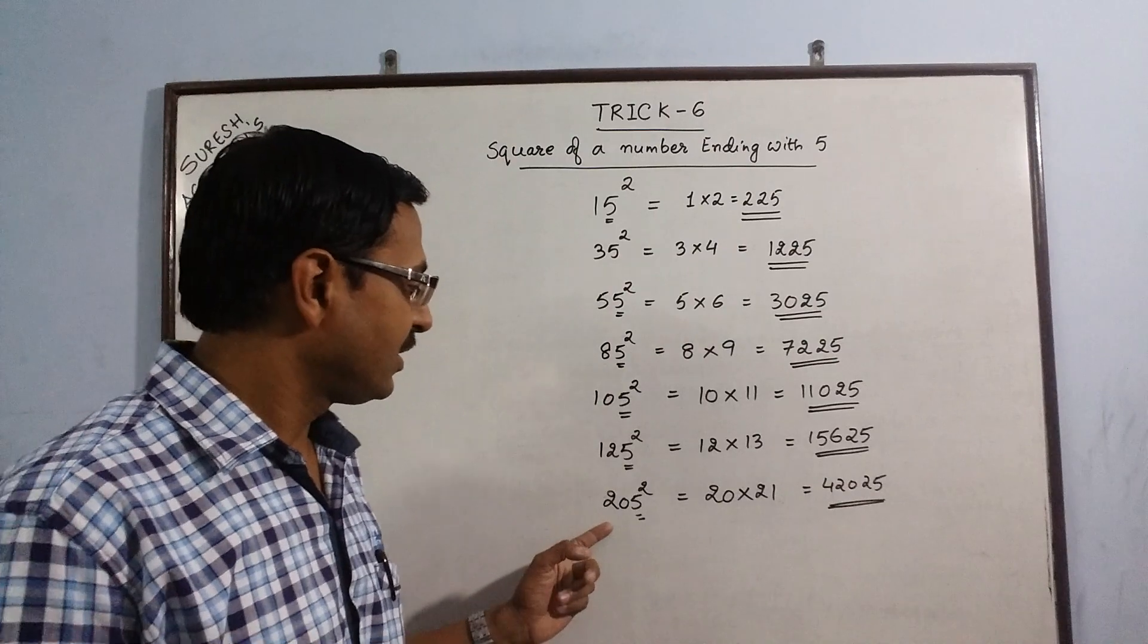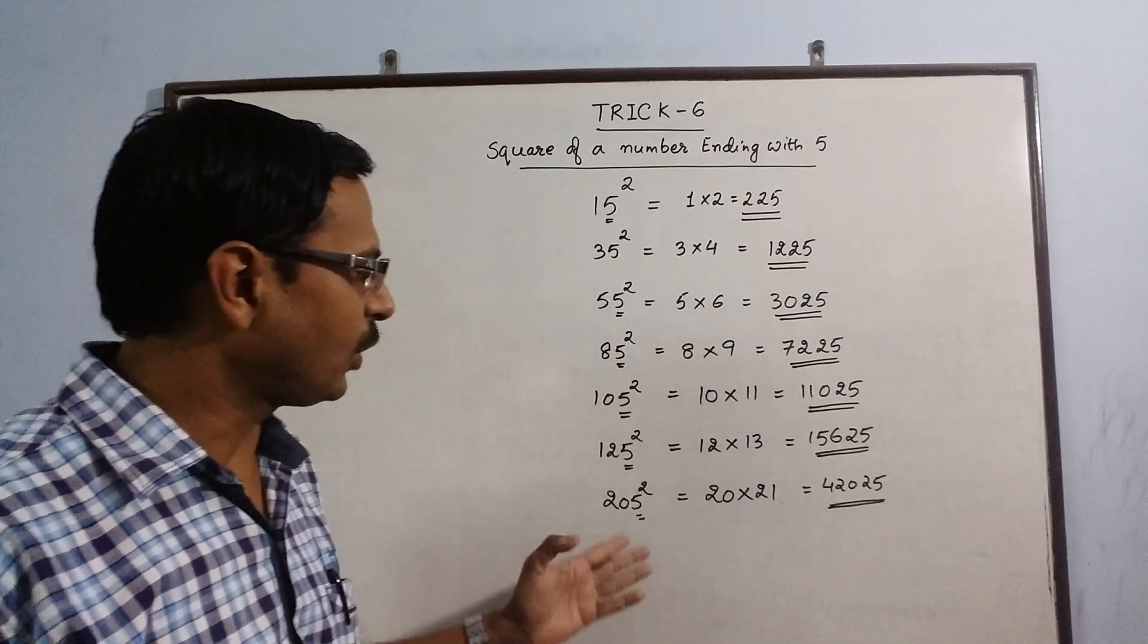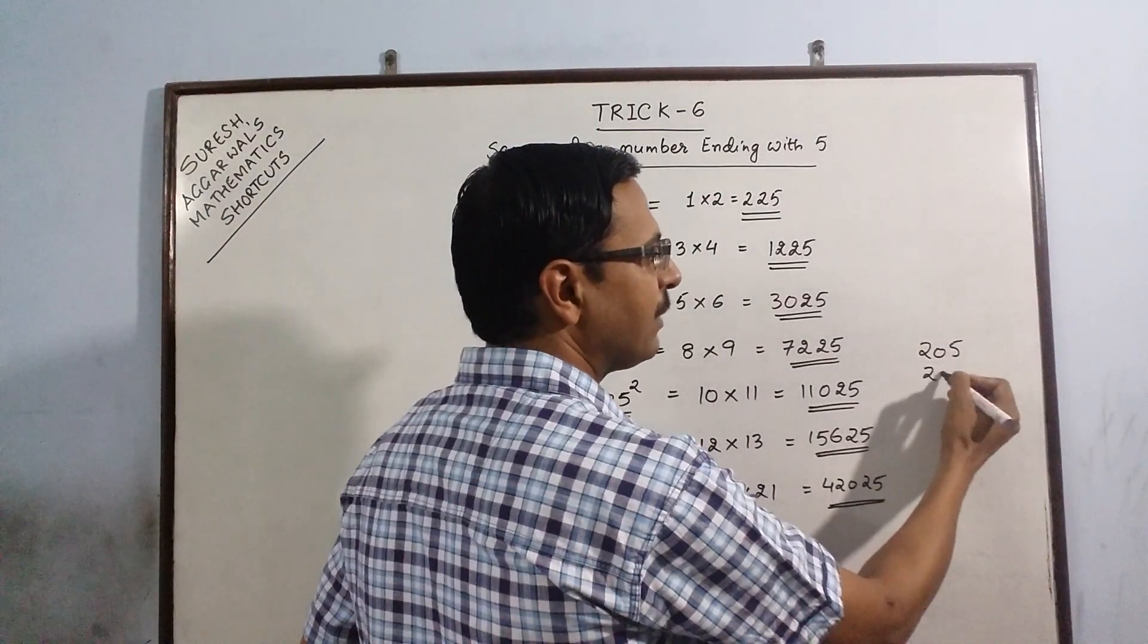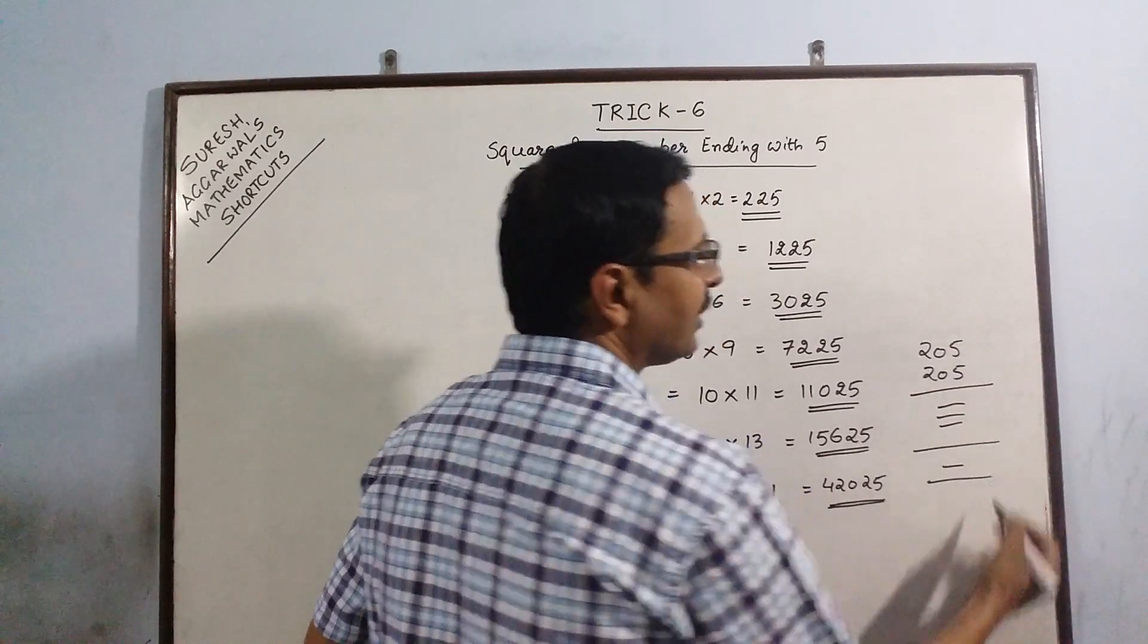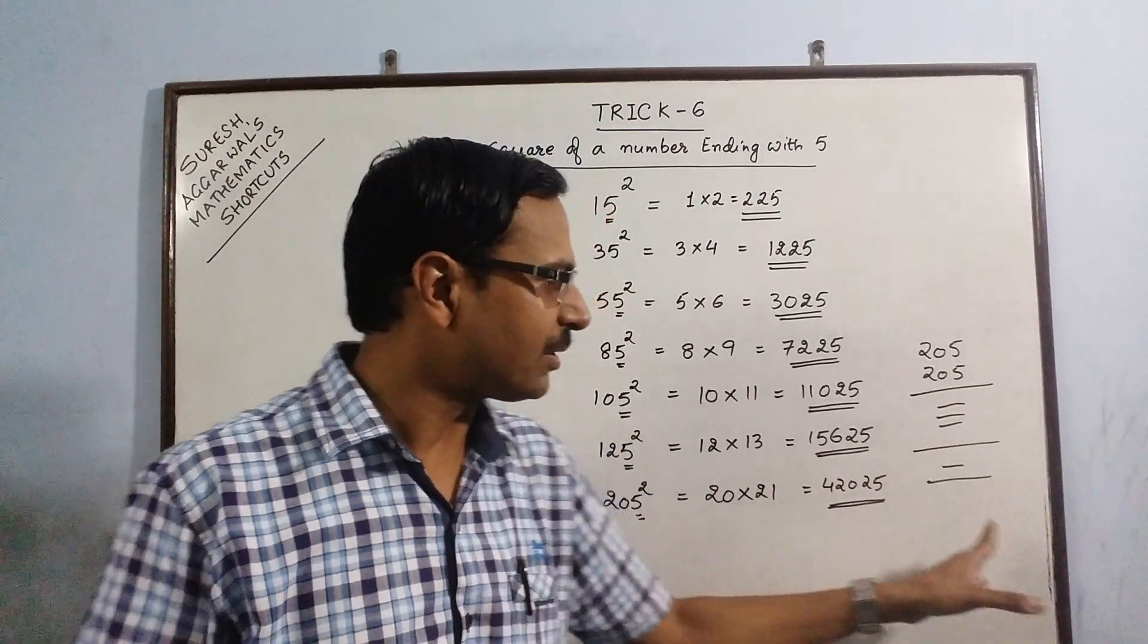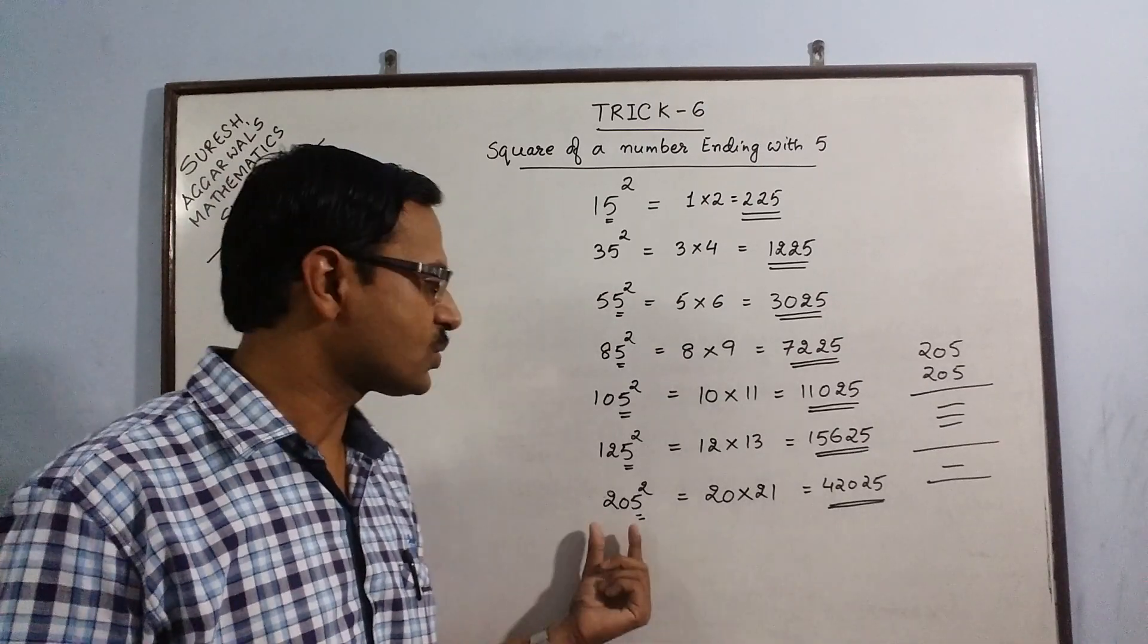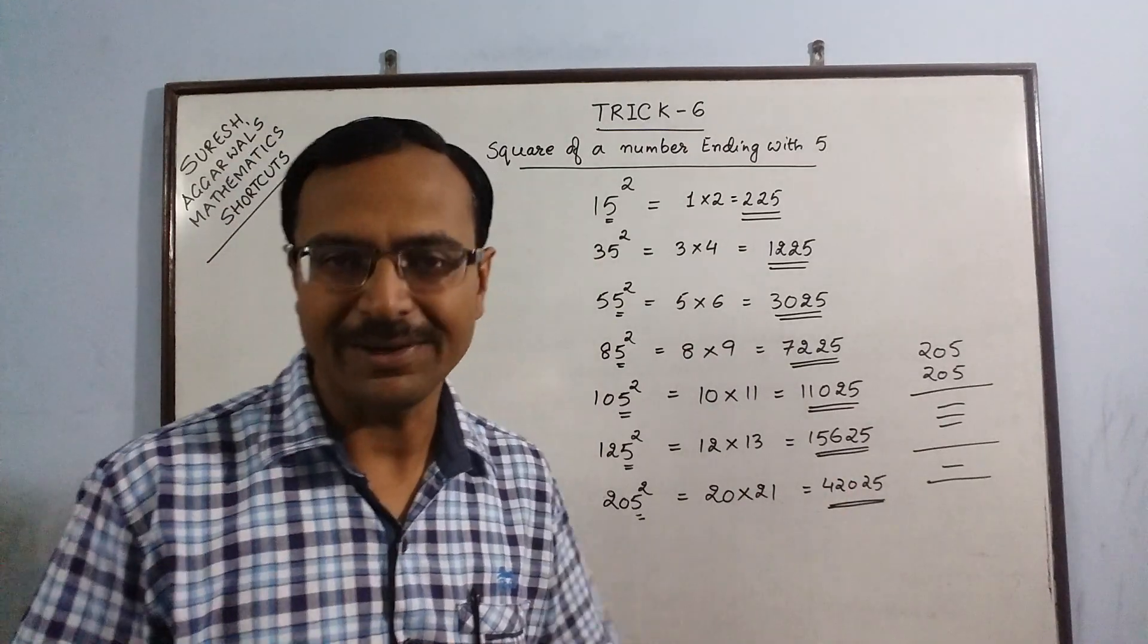In this square, 205 square, the students will take say about 20 seconds for utilizing this traditional method, 205 multiplied by 205. They will write 3 lines here and then 1 addition. They may make silly mistakes in simple multiplication and simple addition here. But here, say you have to carry out just one multiplication, that is 20 into 21 which gives them 420, and they have to suffix 25 after that.